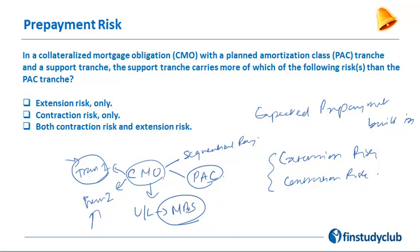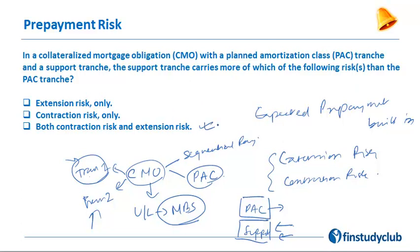In a PAC CMO, you have a PAC tranche and a large support tranche. The support tranche is designed to absorb all risks — both contraction and extension — thereby making the PAC tranche relatively immune to both. So to answer the question, the support tranche carries both contraction and extension risk, unlike sequential pay where shorter tranches have more contraction risk and later tranches have more extension risk.